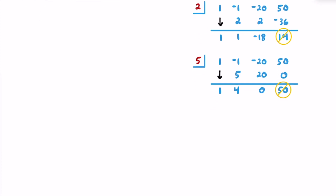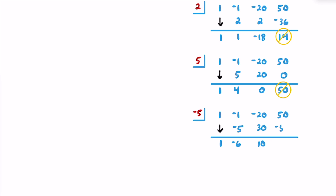The numbers came out pretty nice, so let's try negative 5. Bringing down 1: 1 times negative 5 is negative 5; negative 1 plus negative 5 is negative 6; negative 5 times negative 6 is positive 30; negative 20 plus 30 is 10; negative 5 times 10 is negative 50; and 50 plus negative 50 is 0. We found an x value that makes the equation equal 0 — that's x equals negative 5. So x plus 5 is going to be one of our linear factors.